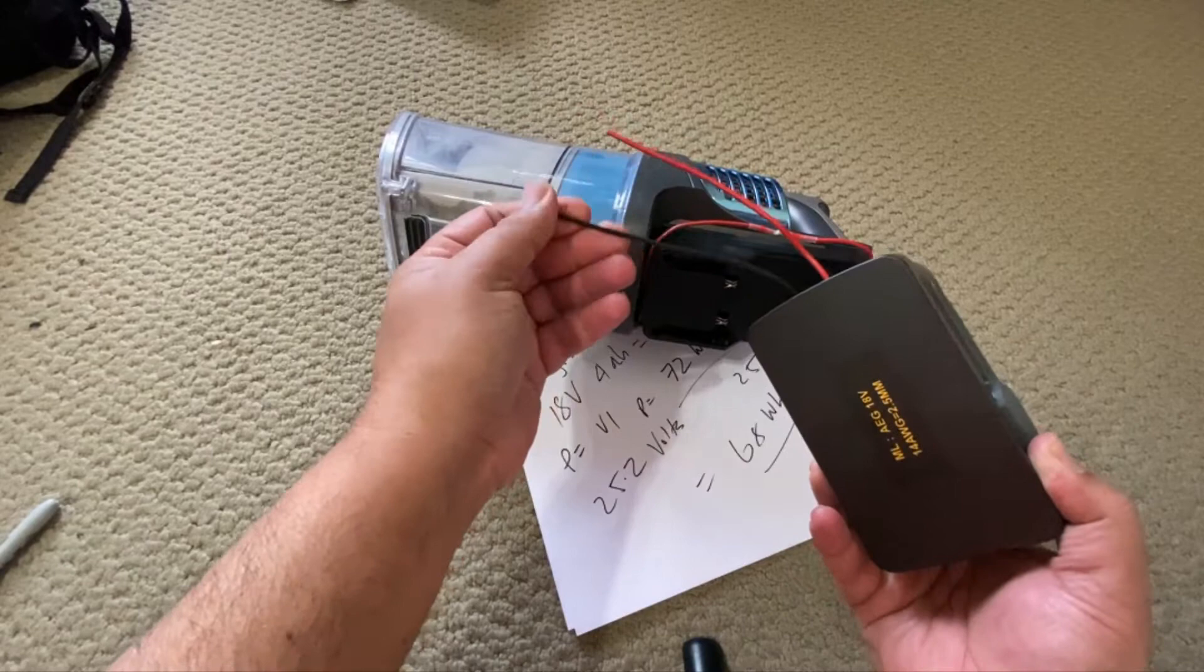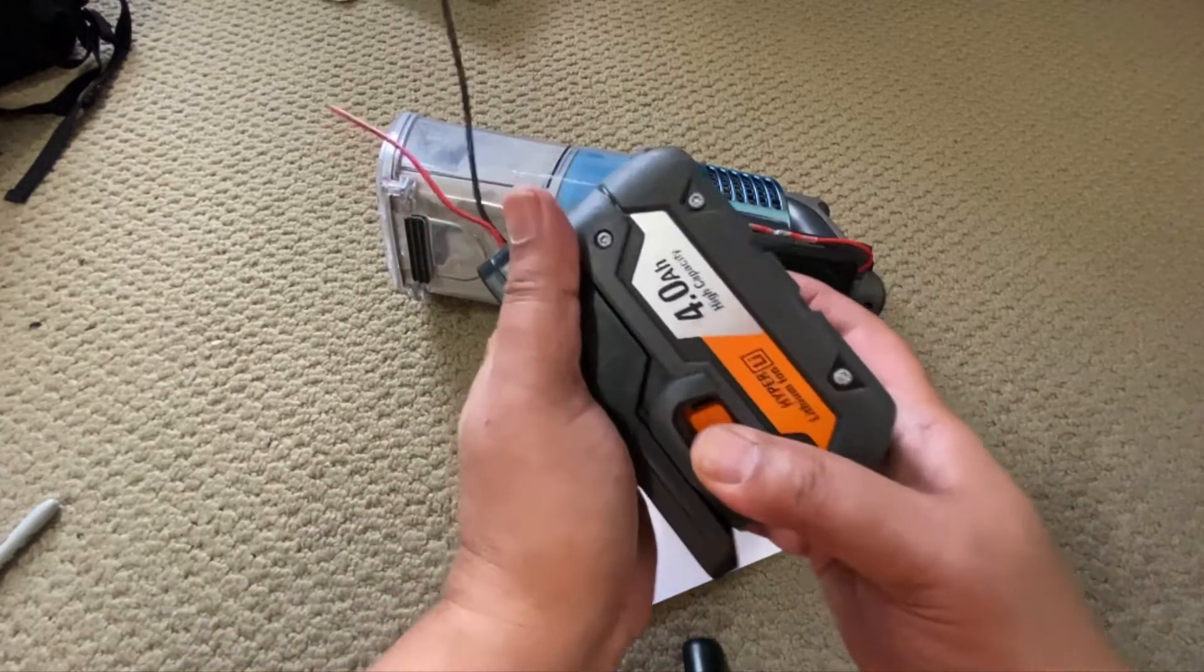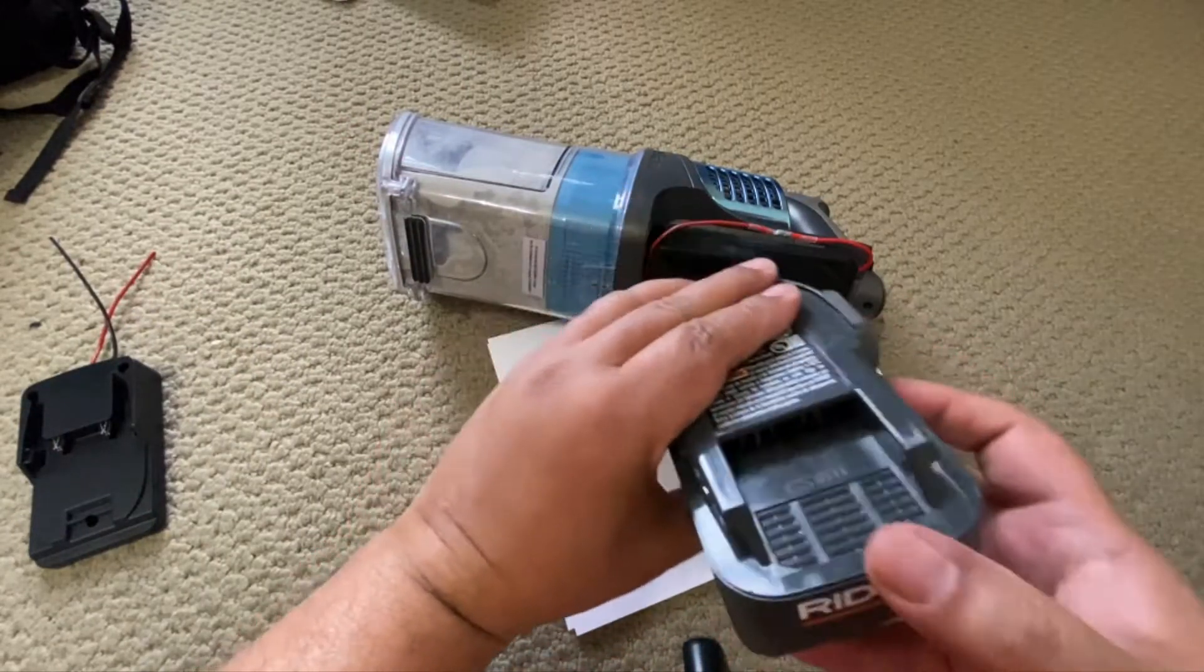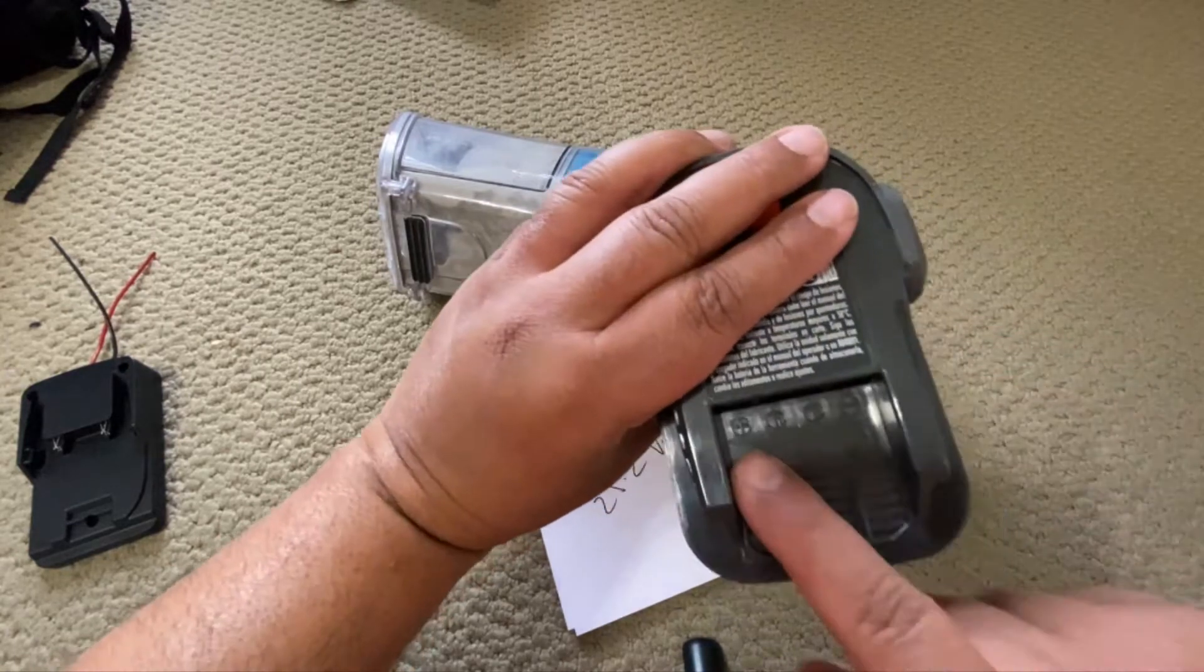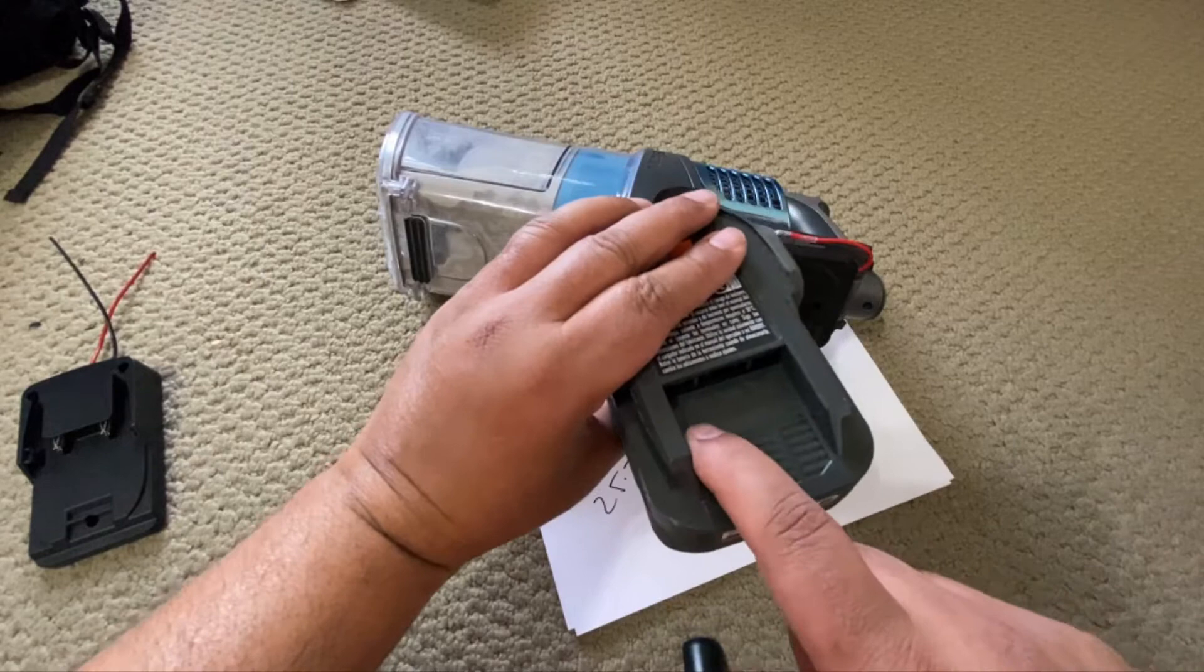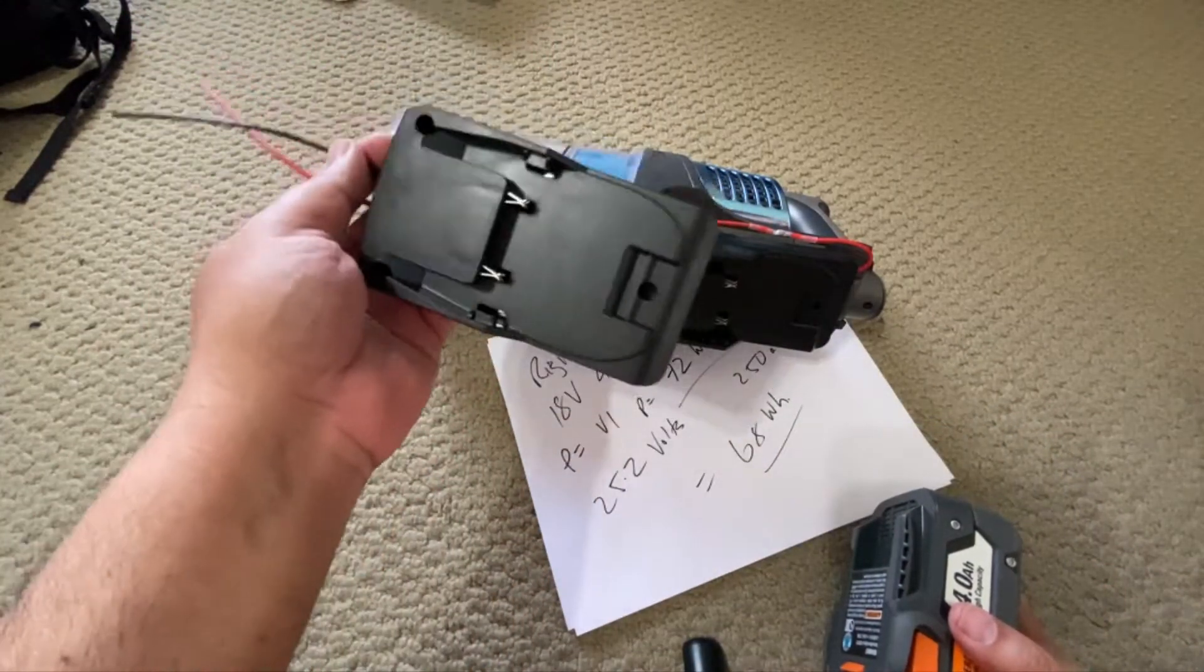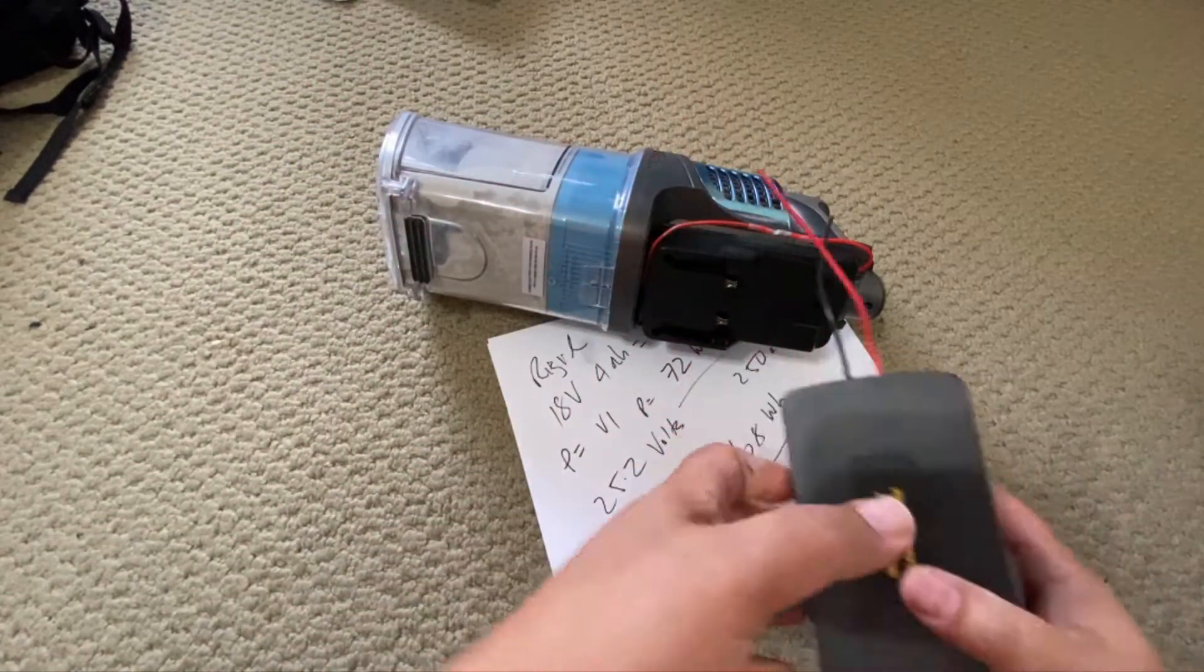Obviously black is negative and red is positive, so the polarity is very important here. You can tell on your terminal here which is positive which is negative, it's labeled here. Plus is positive and minus is negative, so you know what the polarity is on the battery itself that matches to this adapter. They sell these on eBay and Amazon.